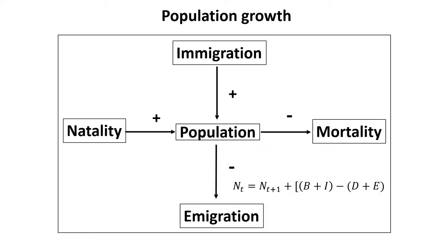Next, we look at population growth. Population growth occurs when something is added or removed. Birth, or natality, adds to the population. Death removes individuals from the population. Migration also impacts total population size. Immigration means individuals coming into this particular population from different regions, which is an addition. Emigration means individuals leaving this population, which is a subtraction.